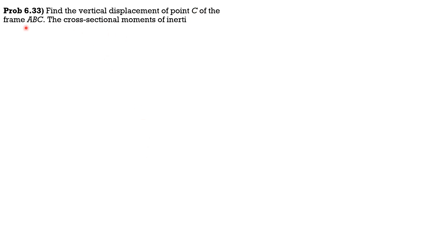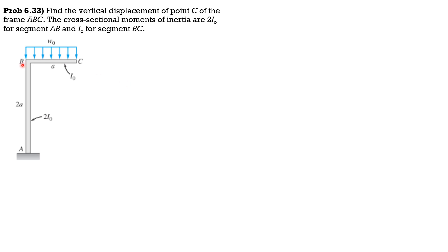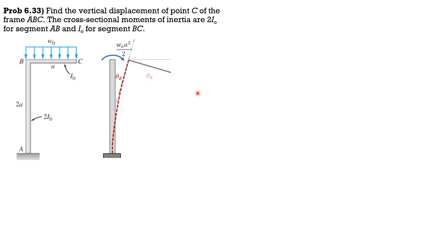Problem 7: Find the vertical displacement of point C of frame ABC, where the moment of inertia is 2I₀ for segment AB and I₀ for segment BC. First, for member AB we have a couple W₀A²/2 at the top, and we can compute theta B from that deflected shape. Then connecting BC, the angle that BC makes with the horizontal is also theta B, so the vertical deflection contribution is A × theta B.